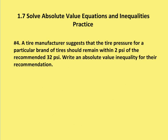Last problem — word problem. I've got a tire manufacturer. When you have a car, you can look at the side of the tire and it'll show you a recommended tire pressure or maximum PSI (pounds per square inch) for that particular tire. So when you go to pump up the tire, you should not pump it beyond a certain amount. This tire manufacturer gives us a range, and the range is going to be within 2 PSI of the recommended 32. So the range is going to be between 30 and 34 — let's call the tire pressure x. How do we rewrite this as an absolute value inequality?